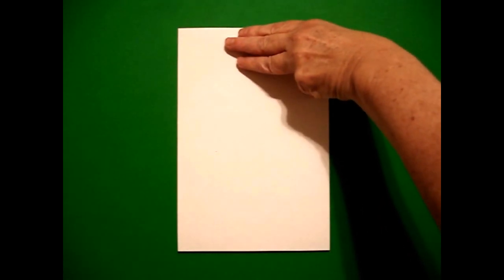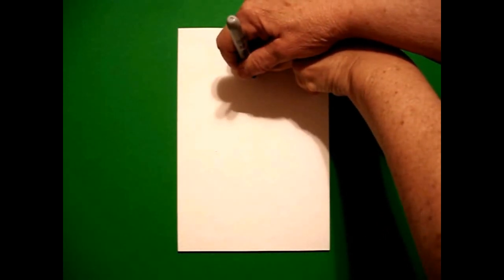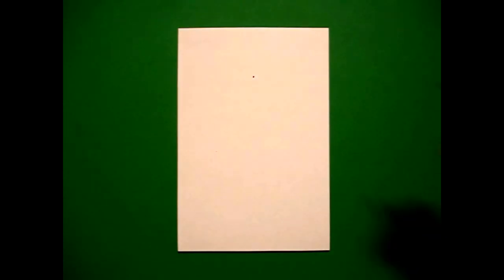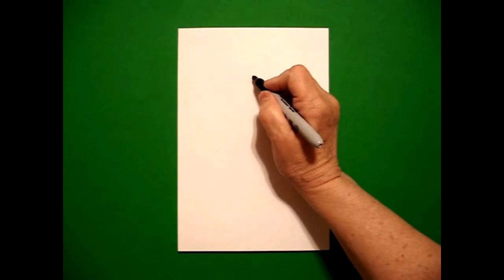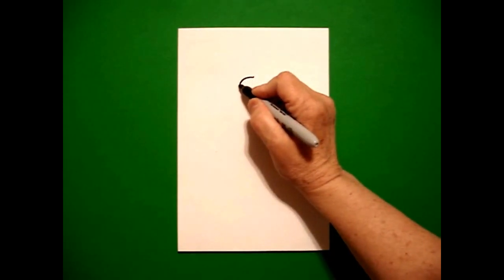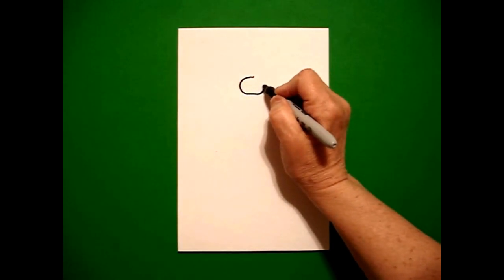Today's project is how to draw an ice cream sundae. Take three fingers from the top, right in the middle, and put a dot. From that dot, draw a curve line out, curve line down, curve line up, and connect.